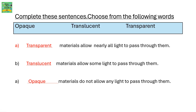Complete these sentences — choose from the following words: opaque, translucent, and transparent. Transparent materials allow nearly all the light to pass through them. Translucent materials allow only some light to pass through them. Opaque materials do not allow any light to pass through them.